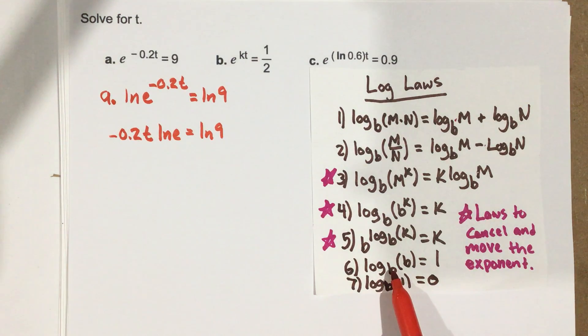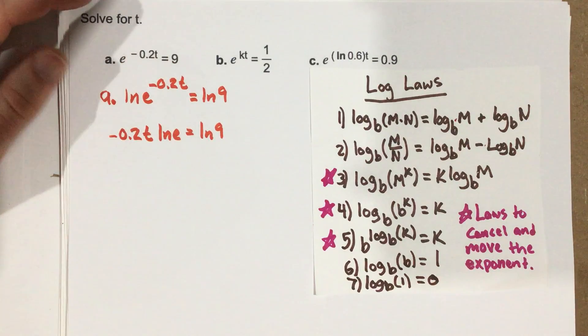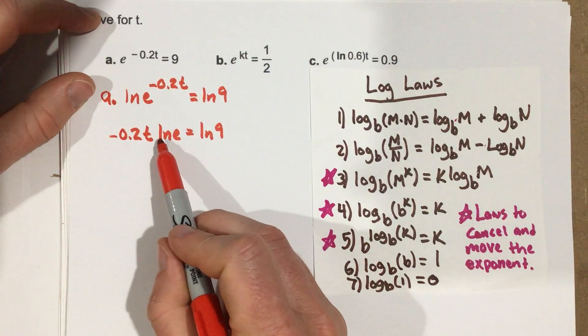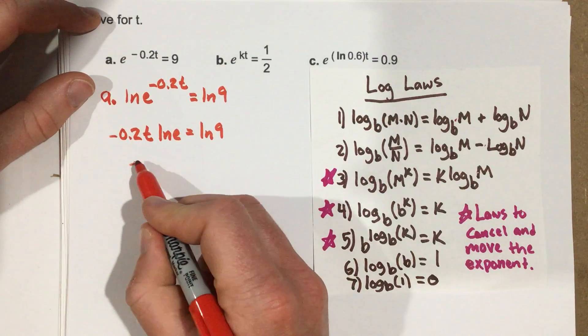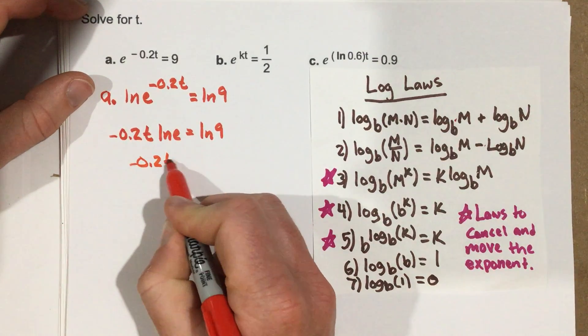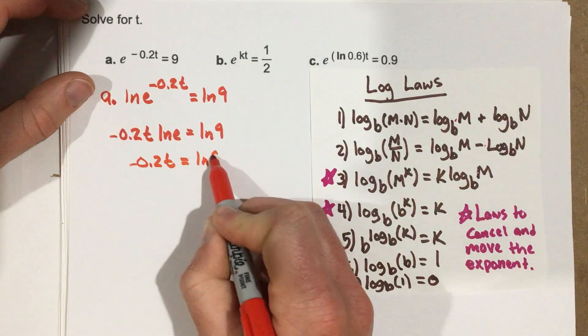Meaning if I have a log of some base, and inside the logarithm is the exact same base number, then it's just 1. So natural log e is actually just 1. We can cancel that out, and we have negative 0.2t equals natural log 9.